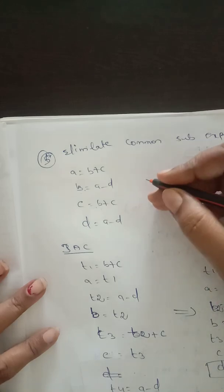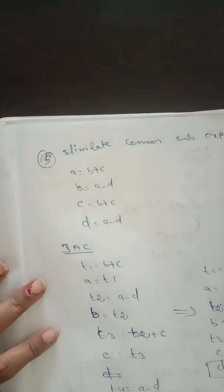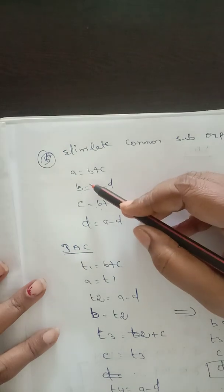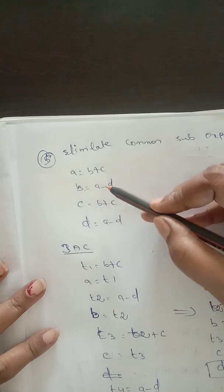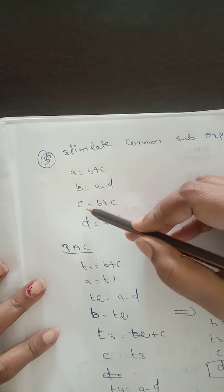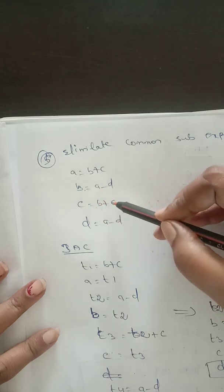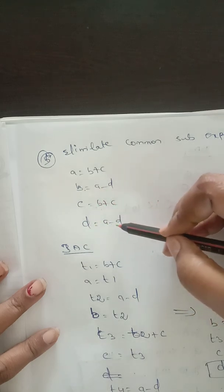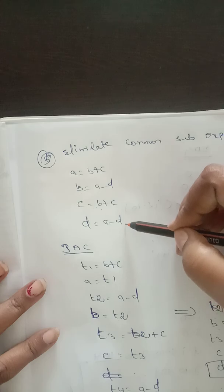Good morning everyone. Today we will see one example for common sub-expression elimination. The given example is: a equal to b plus c, b equal to a minus d, c equal to b plus c, and d equal to a minus d.